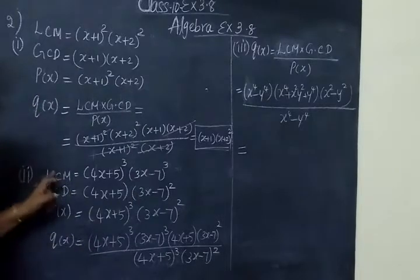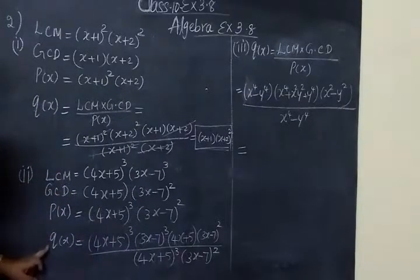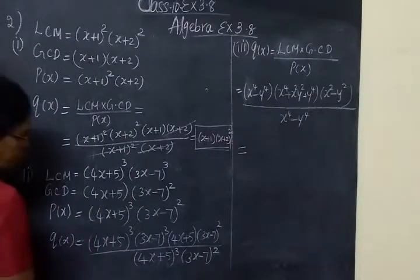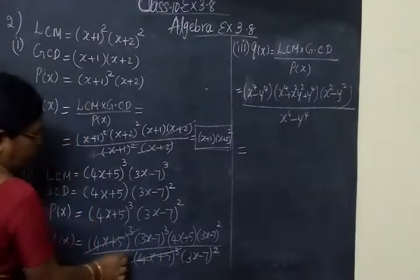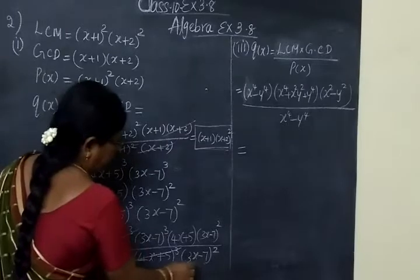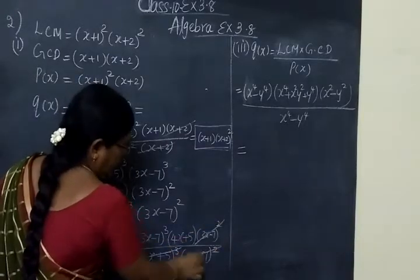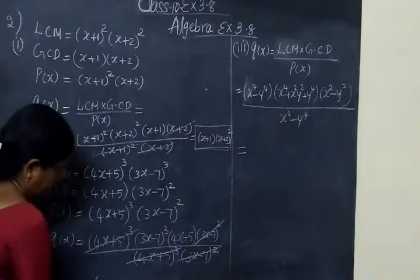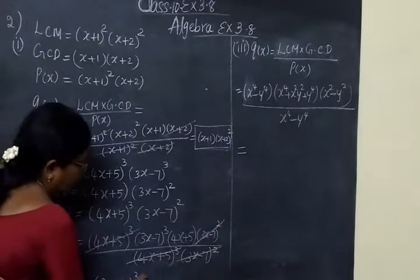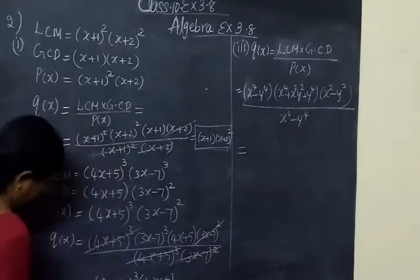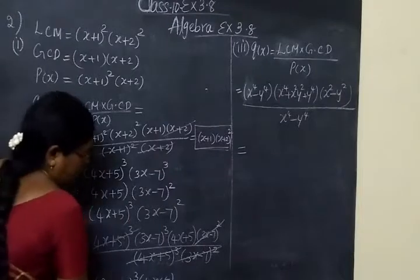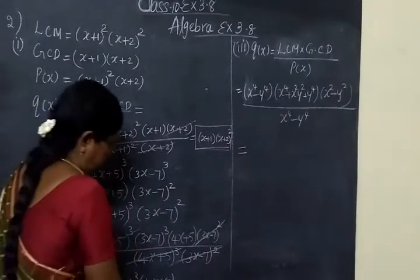Next, for the second question, we put LCM, GCD, P of X, and Q of X into the formula. The common terms cancel out, leaving 4X plus 5 whole cube and 3X minus 7 whole square. So the answer for U of X is 3X minus 7 whole cube, then 4X plus 5. That's the answer for this polynomial.